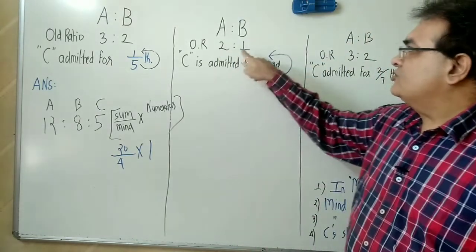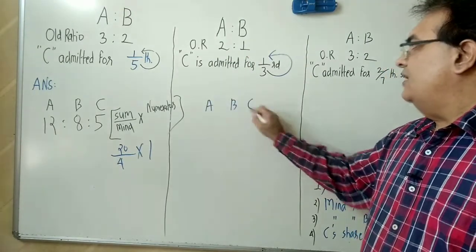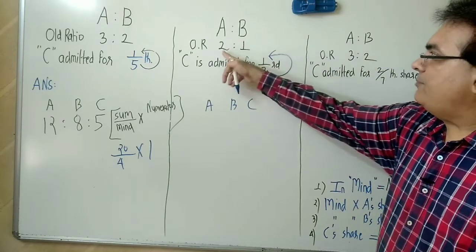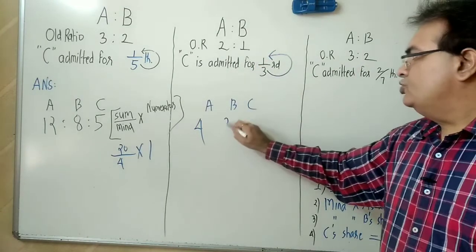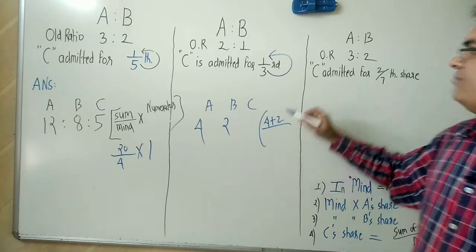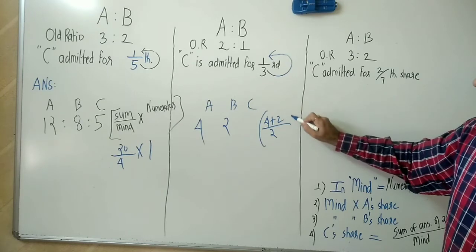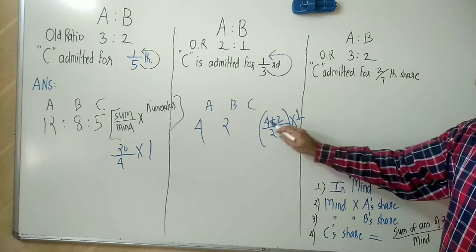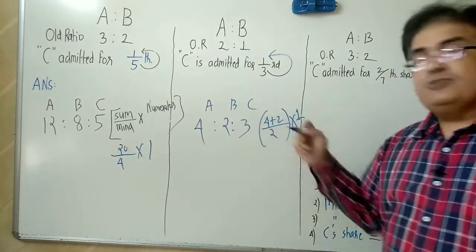2 in your mind — multiply by A's share: 2 × 2 = 4. 2 in your mind — multiply by B's share: 2 × 1 = 2. For C: add them up — 4 + 2 = 6, divided by 2 (what's in mind), times numerator 1 = 3. The answer is 4:2:3. You can verify with the traditional method.